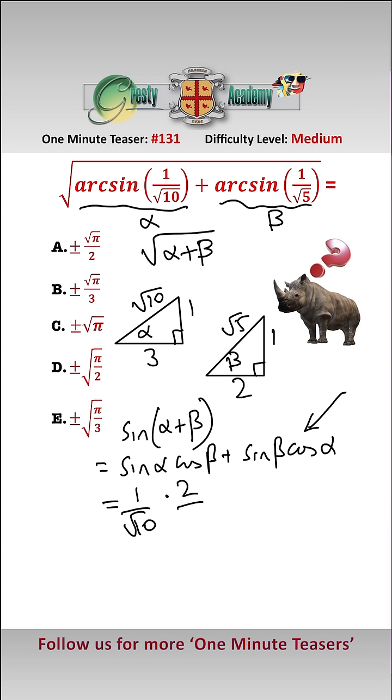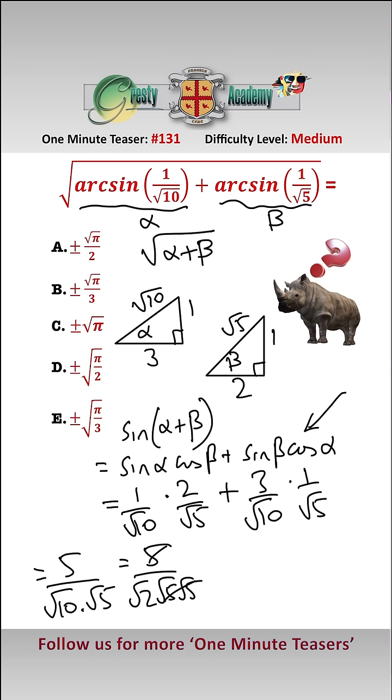3 over root 10 times 1 over root 5. And that equals 5 over root 10 root 5, which equals 5 over root 2 root 5 root 5. That cancels, which equals 1 over root 2.